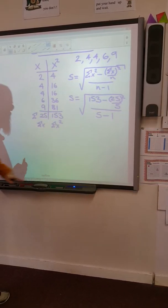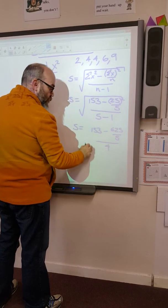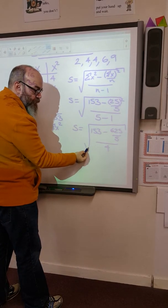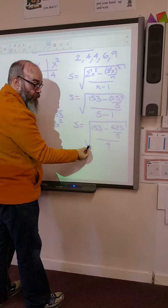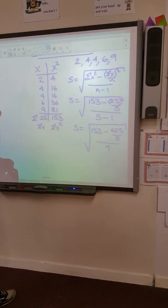Simply substituting in the values which we have, n by the way is the number of items in my data set, so that's going to be the square root of 153 minus 25 squared.